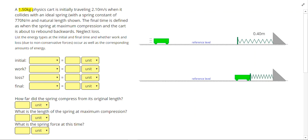A 1.5 kilogram physics cart is initially traveling 2.10 meters per second when it collides with an ideal spring with a spring constant of 770 newtons per meter and natural length shown. The final time is defined as when the spring is at maximum compression and the cart is about to rebound backwards, neglect loss.